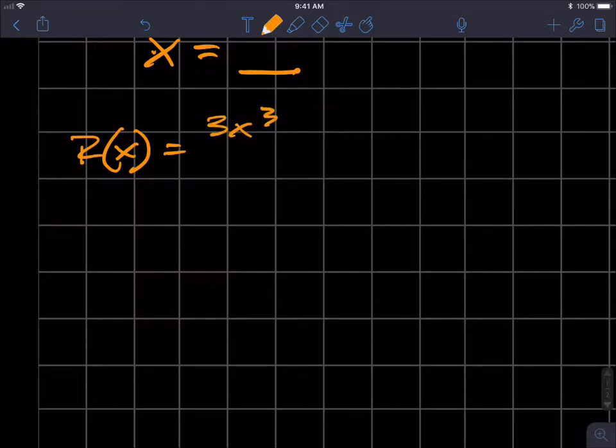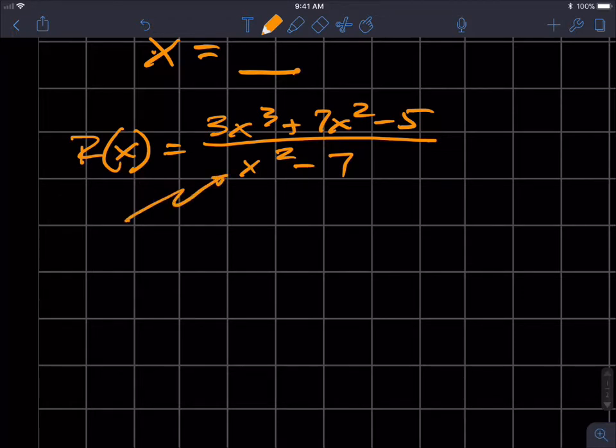3x³ + 7x² - 5 over x² - 7. So first of all, let's factor that polynomial function in the denominator.